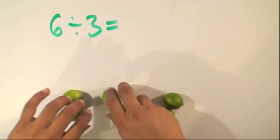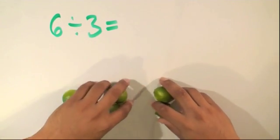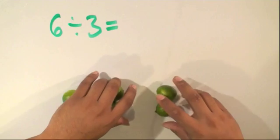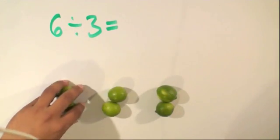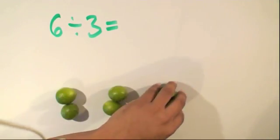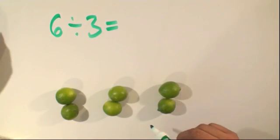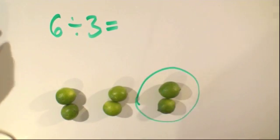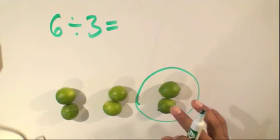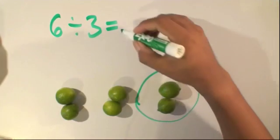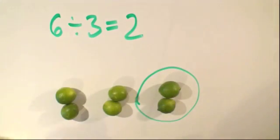So we'll find a way to divide this by 3, and now we can see that we have 3 equal sets: 1, 2, 3. And in order to answer this division problem, we simply have to count the number of limes that we have in one set: 1, 2. So we can see that our answer is 2.